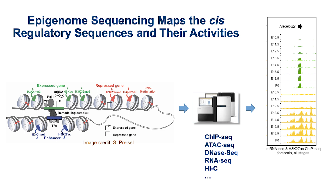However, previous conventional assays have in large part used heterogeneous tissues as their input material, and as a consequence they've produced population average measurements, which obscure the regulatory sequences that are active in individual human cell types. As a consequence, current catalogs of regulatory sequences in the human genome still lack information about the cell type-specific activities of most elements. With that background in mind, I'd like to turn things over to Dr. Alan Wong, who will discuss the technical advances that made the current study possible and provide an introduction to our study design.